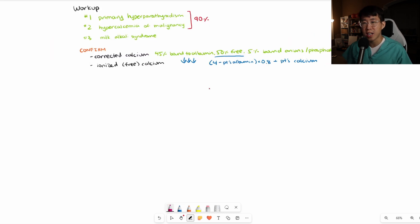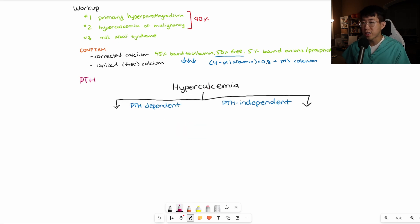After you've confirmed the patient has hypercalcemia, the most important test to check next is the PTH. That's because the first major branch point in our workup is checking the PTH and determining, is this a PTH-dependent process or PTH-independent process? On the left side, we have PTH-dependent or PTH-independent.